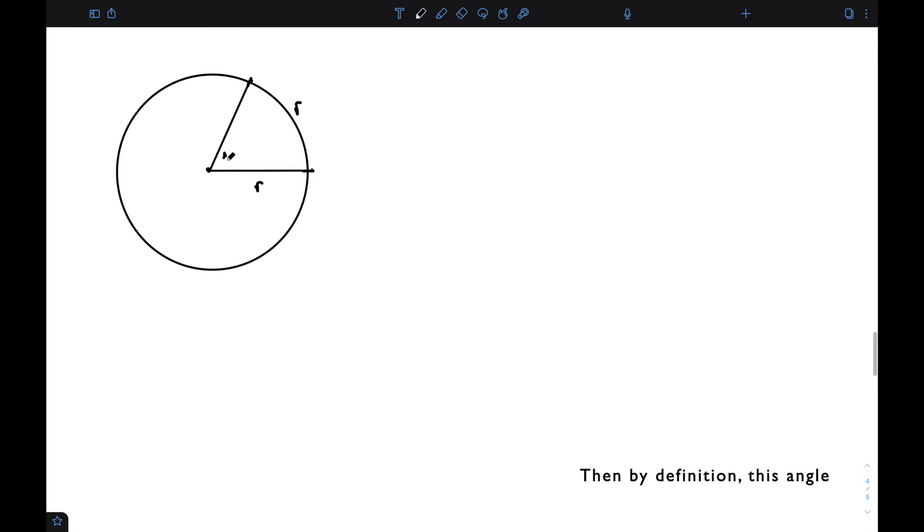Then by definition, this angle is 1 radian. This is how we define a radian.